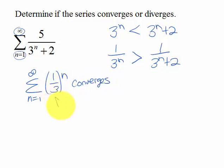We know that we have a geometric series and the absolute value of the common ratio in this case is 1/3, which is less than 1, then the geometric series converges.